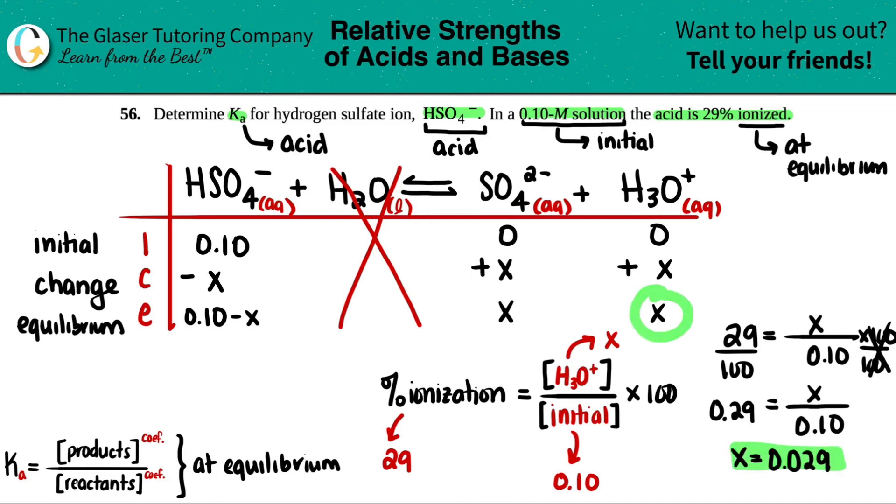That's the X concentration. And that was X, so now I know at equilibrium this is 0.029. This X is also 0.029. And this would be 0.10 minus 0.029. So 0.1 minus 0.029 gives 0.071.